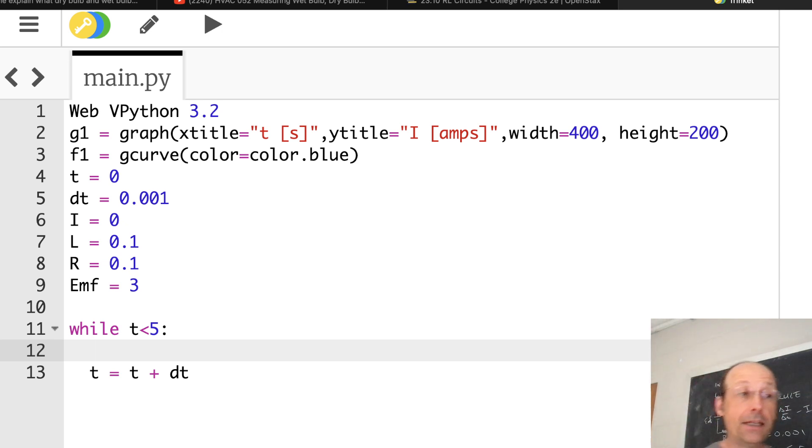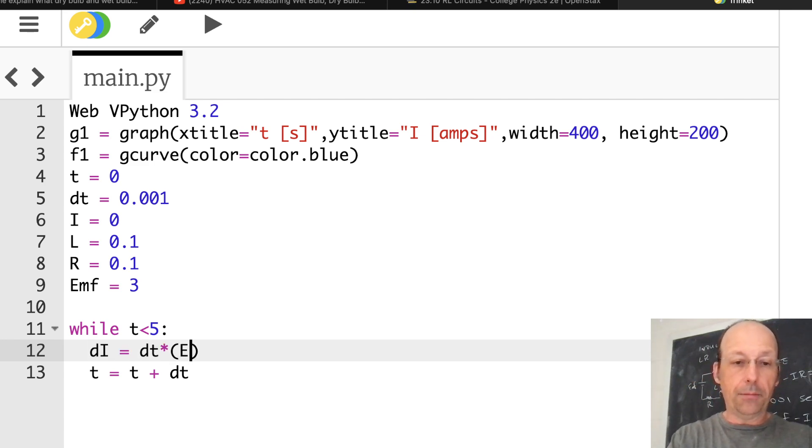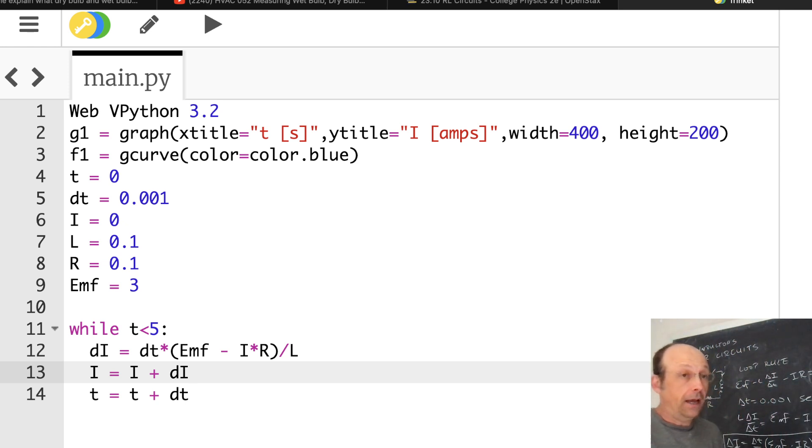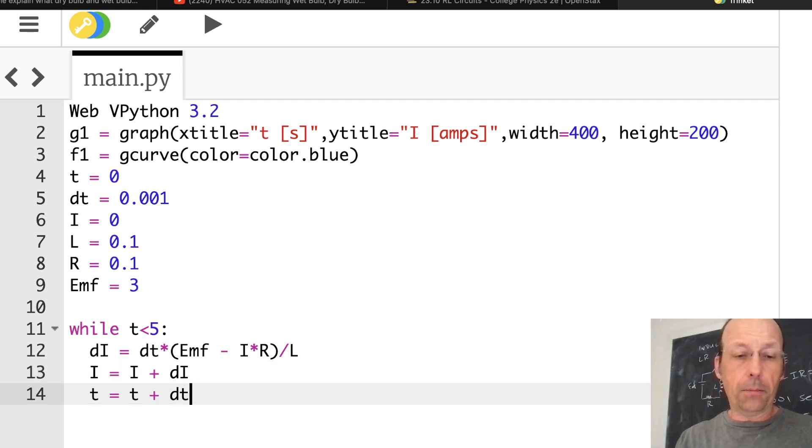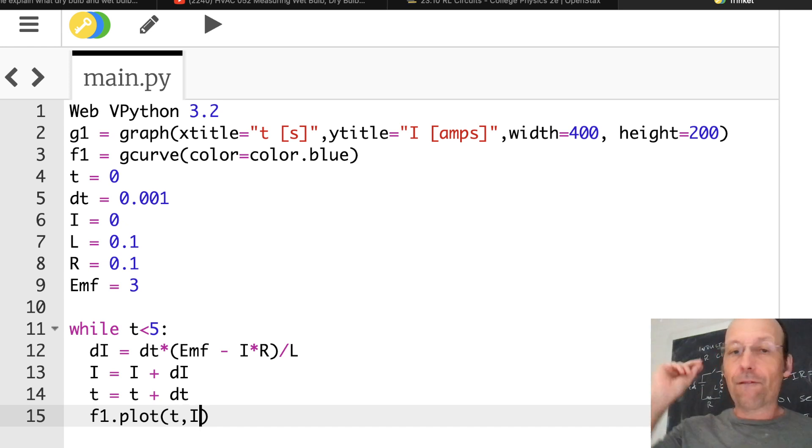Now what I'm going to do is to calculate my delta I on the board. I'm going to calculate it. DI is going to be equal to DT times EMF minus I times R divided by L. Is that right? Yeah, I got it right. Okay, now I'm going to use that to update I. I equals I plus DI. And then that should be it. I'm going to keep changing my current. Now, let's just plot the whole thing. You could put the plot before or after the time. It doesn't really matter. I'm going to put it after, F1.plot TI. Let's run it.